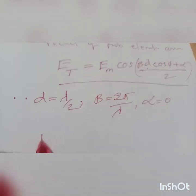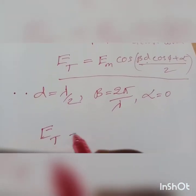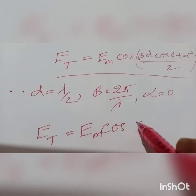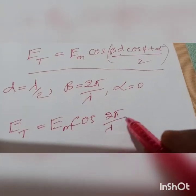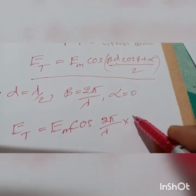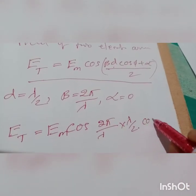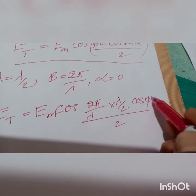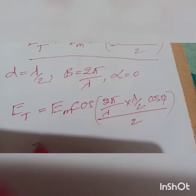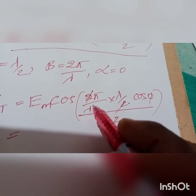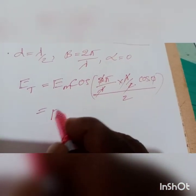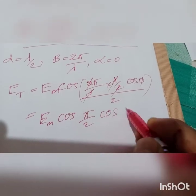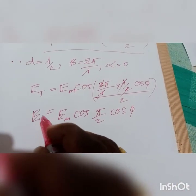For this case, the total electric field Et equals Em times cosine of (2π/λ × λ/2 × cos φ + 0) divided by 2. The 2's cancel and the lambdas cancel, leaving Et = Em × cos(π/2 × cos φ). This is the equation we work with.